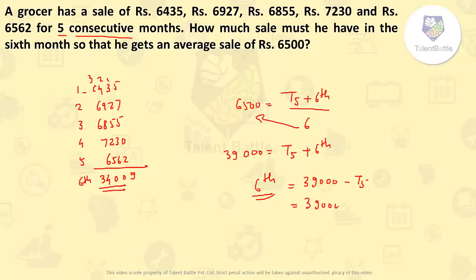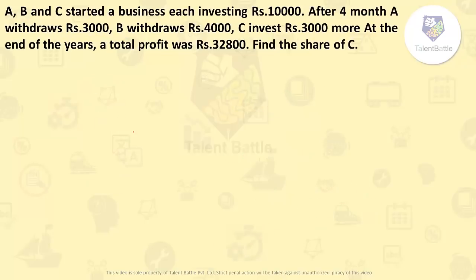39000 minus 34009 will be equal to 4991. So he must have a sale of rupees 4991 in the sixth month so that the average becomes 6500.